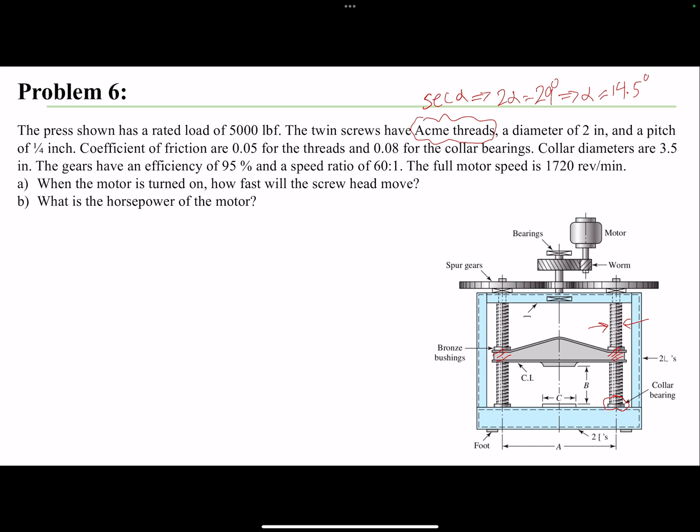So here we have a gearing mechanism. Why do we use gearing here? Because we are going to increase the torque and we are sacrificing the speed. The speed ratio is 60 to 1, so we are reducing the speed 60 times and increasing the torque 60 times.